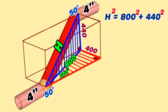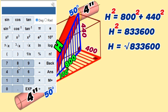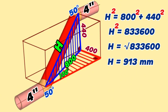Continuing to calculate, H² equals 833,600. We continue: H equals the square root of 833,600. Using a calculator, H equals 913 millimeters. 913 millimeters is the hypotenuse of the vertical blue right triangle and is also the distance between the centers of the 50-degree butt-weld elbows.